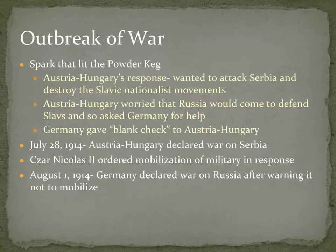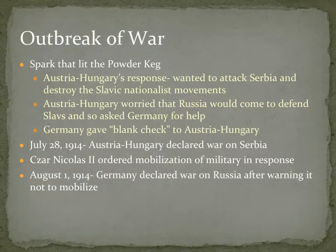In response, Tsar Nicholas II of Russia ordered the mobilization of the Russian military — not attacking anyone, but moving troops closer to the border in anticipation. A couple of days later, Germany declared war on Russia after warning it not to mobilize. Germany said: we see you moving your troops closer to our border; this is very threatening, and if you don't stop, we're going to take it as an act of war — which is exactly what happened.